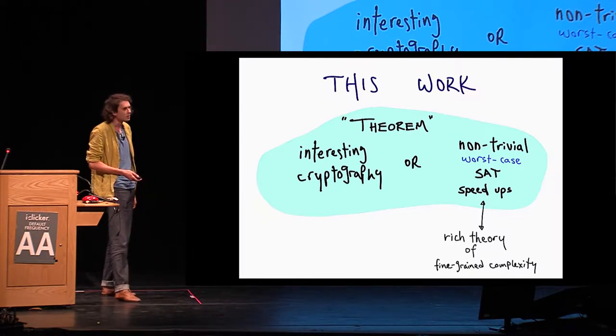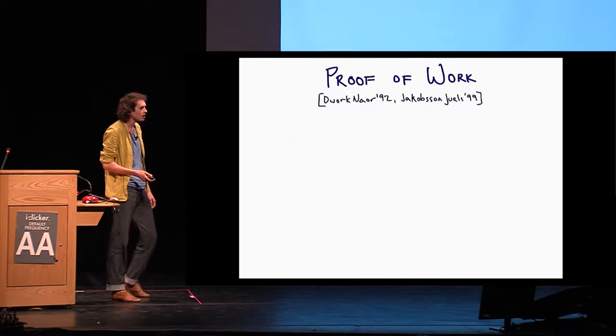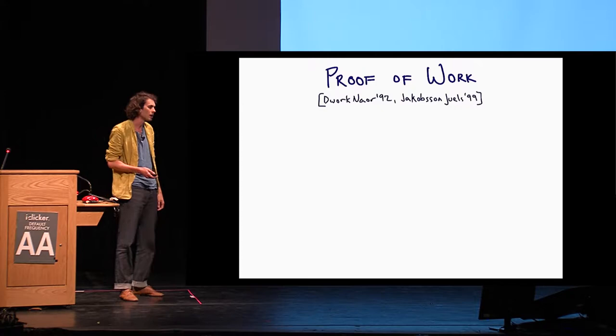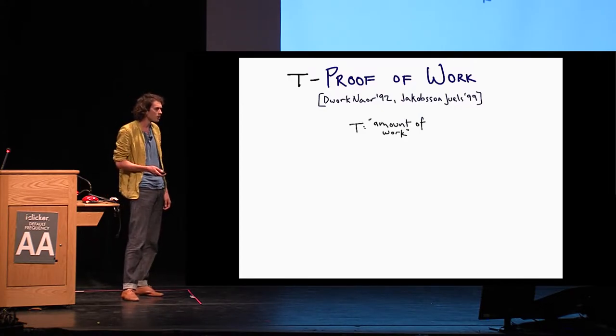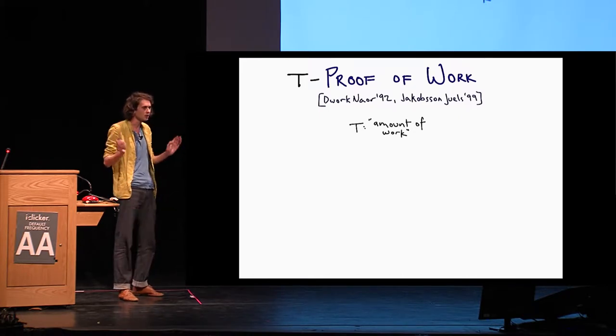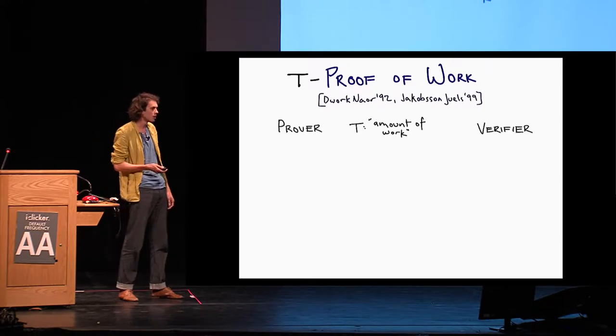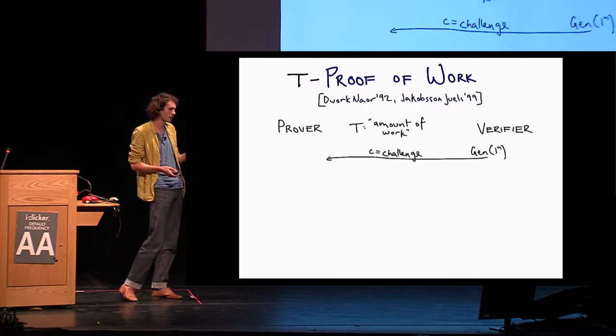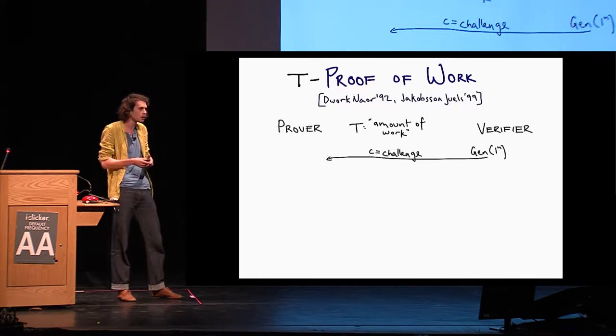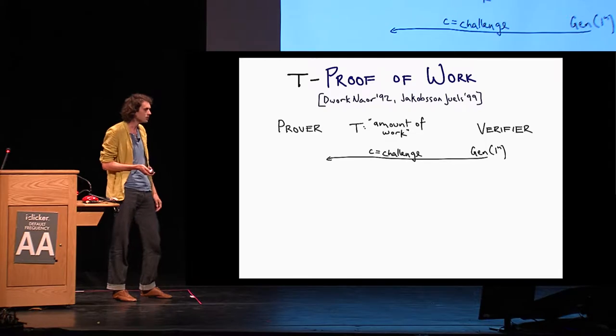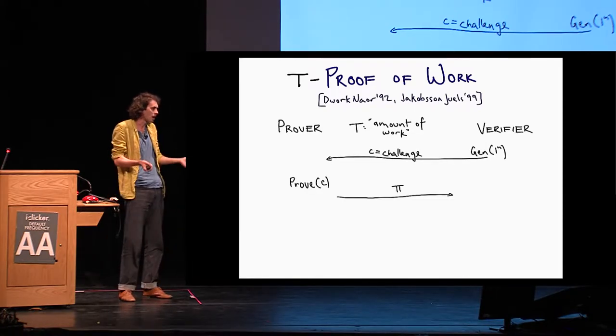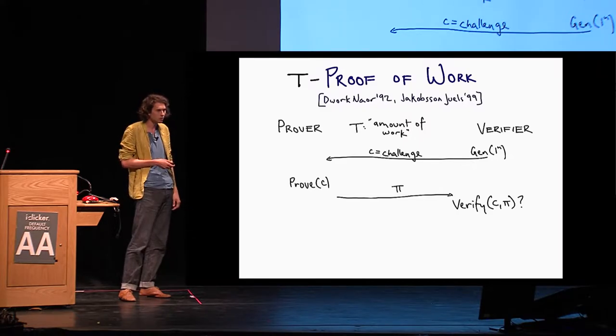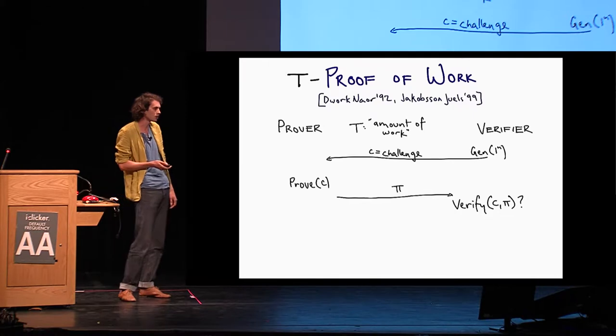So before I go any further, what exactly do I mean by interesting cryptography here? What we're going to talk about today is proof of work. This is a notion introduced by Cynthia Dwork and Moni Naor in 92. In the proof of work scheme, first, we're going to parameterize this proof of work scheme with a parameter t, which is going to quantify the amount of work that we want proven. We're going to have two players, a prover and a verifier. It's going to consist of three algorithms.